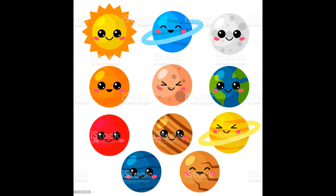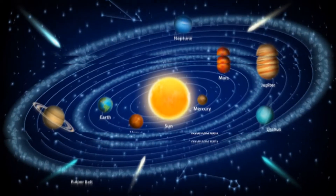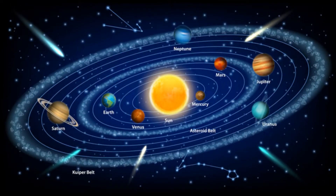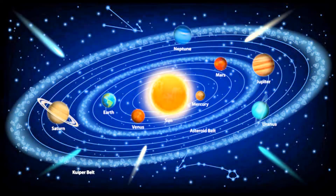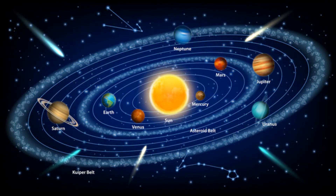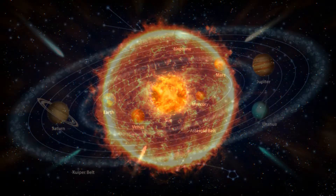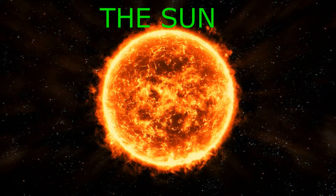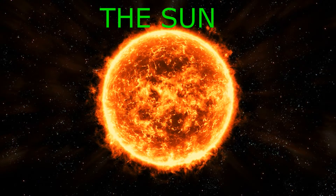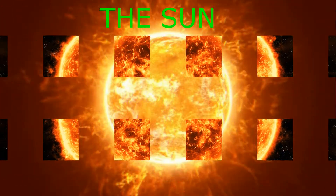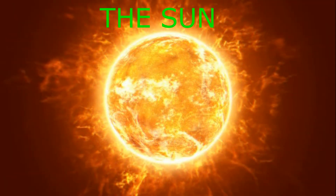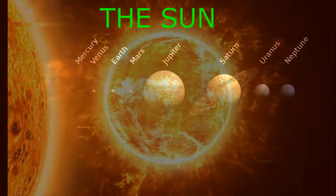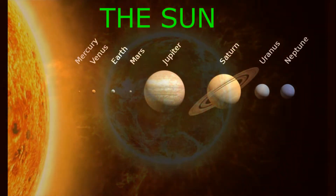Some interesting facts about the solar system: the solar system formed around 4.6 billion years ago. The sun is a star located at the center of the solar system. It gives light and heat and is made up of gas. Without the sun, nothing could survive. There are eight planets that orbit the sun.